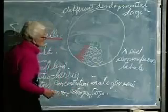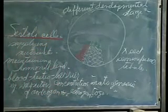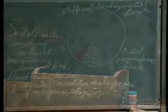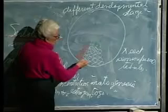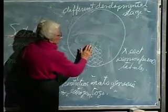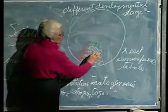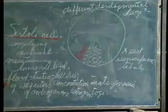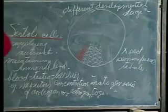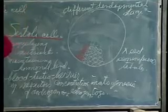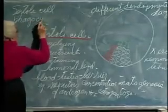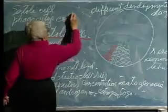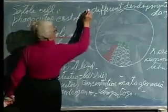Also, the Sertoli cells then, since these developing sperm will have cytoplasm, but by the time you get up to their final stage as sperm only, the cytoplasm is shed. And the Sertoli cells then will phagocytize the cast off cytoplasm.